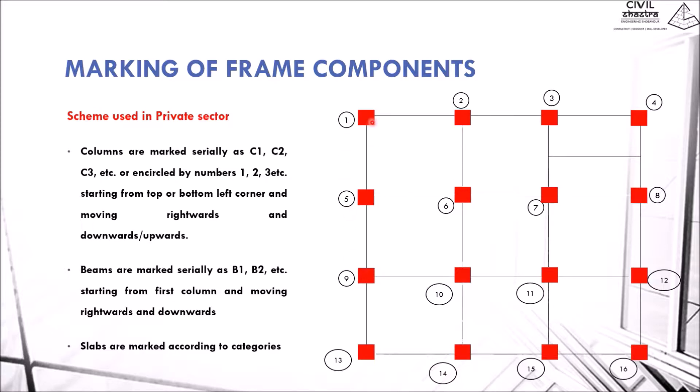Then we'll move on to marking the beams, which will start from the first column: B1, B2, B3. This is the secondary column—B4, then B5, B6, B7, B8, B9, B10, B11, B12, B13. We've got 13 horizontal beams. Then we'll mark the vertical beams. Imagine this plan is rotated by 90 degrees to the right, so this will become the first top left column. We'll start marking from here: B14, B15, B16, B17, B18, B19, B20, B21, B22, similarly till B25. So we've got 25 beams with one secondary beam.